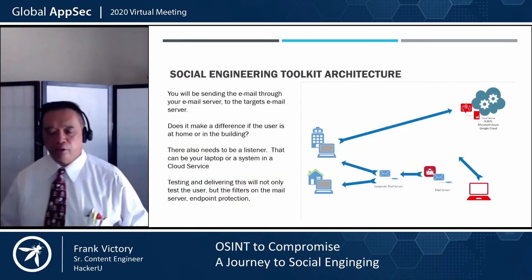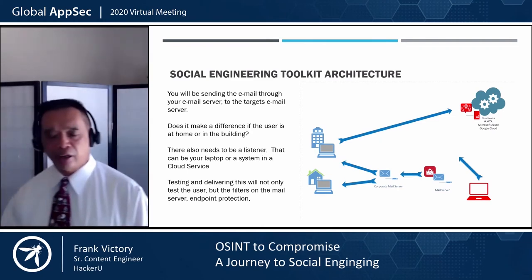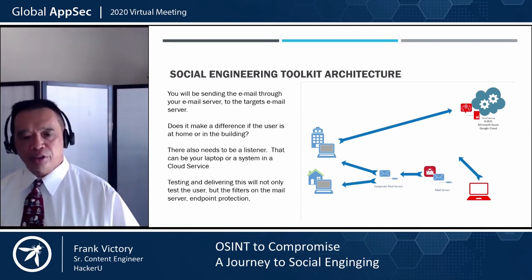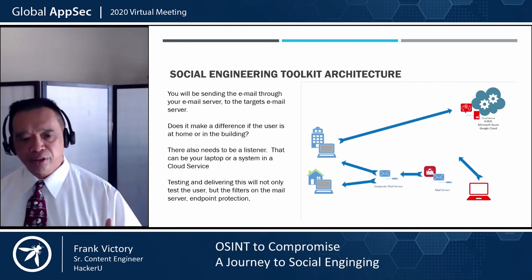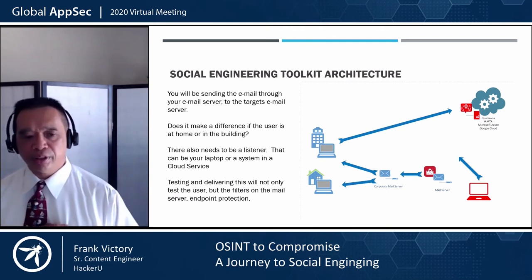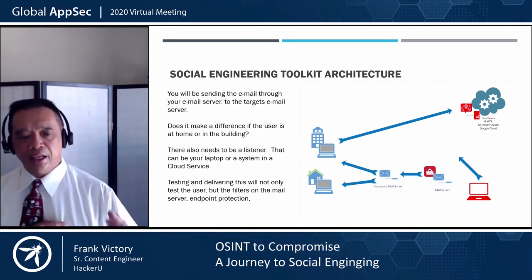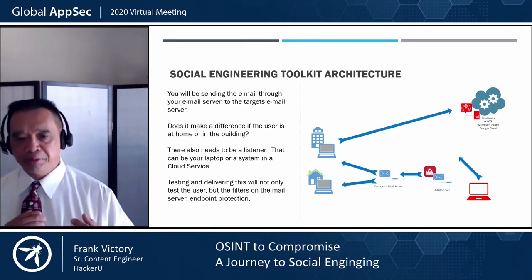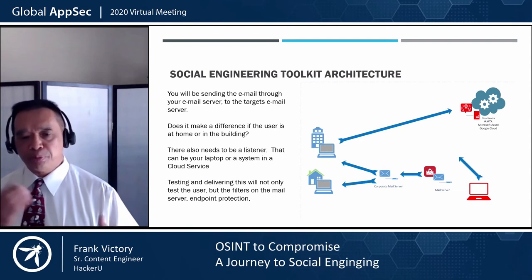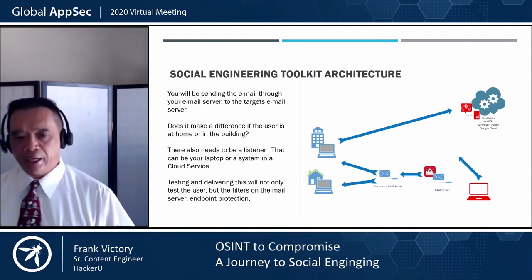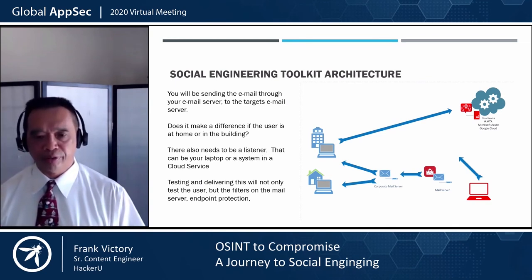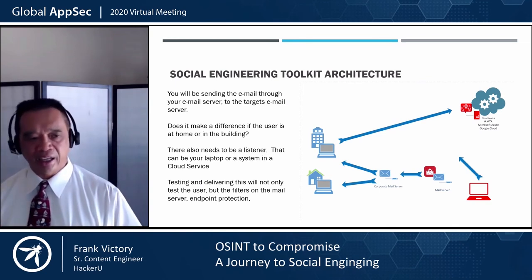For proper social engineering we'll need a couple of different architectures. Looking at the graphic, we have our mail server — we're going to try to deliver the mail through the corporate mail server over to the user. The user will hopefully click on the link, which will run a script that egresses out to a different host. I would suggest putting that host somewhere public like AWS, Azure, or Google Cloud. Be sure to test and read their terms of service to make sure you're not violating any terms.